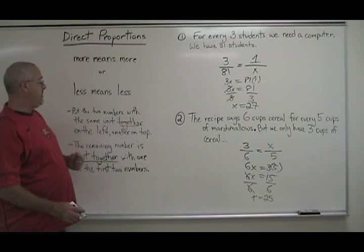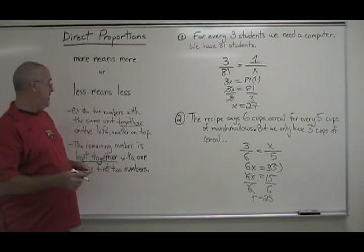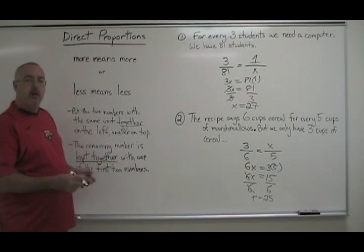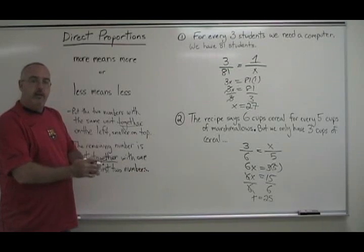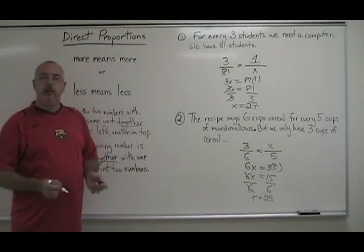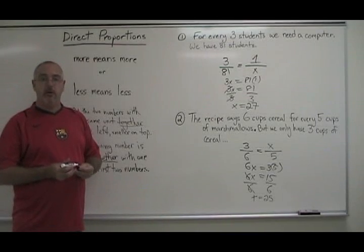Put the two numbers with the same unit together on the left, smaller one on top. And then put the remaining number together with the number that it goes with by the logic of the problem. Put the x in the last remaining place and you will always get your direct proportions correct.